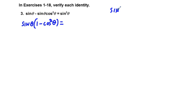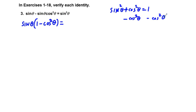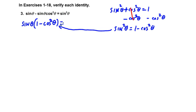Going back to the first Pythagorean identity, sine squared theta plus cosine squared theta equals 1. If we subtract cosine squared theta from both sides, we have sine squared theta equals 1 minus cosine squared theta. So we can replace the quantity 1 minus cosine squared theta with sine squared theta. Now we write sine theta times sine squared theta.